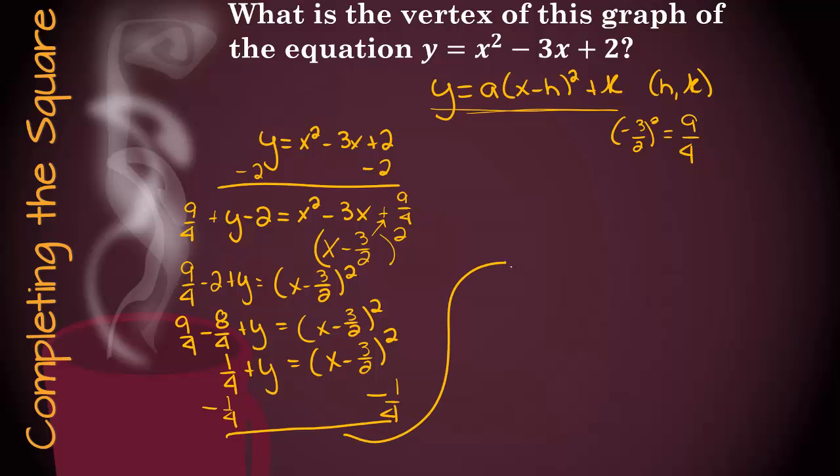And I'm going to write it up here. So we'll end up with y equals x minus 3 halves squared minus 1 fourth. So it turns out that our vertex is going to be 3 halves, a positive 3 halves because it's the opposite, and negative 1 fourth. Great.